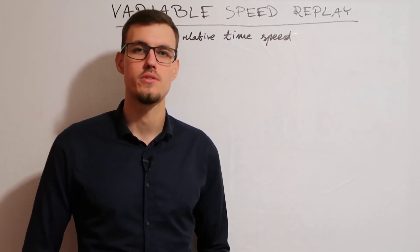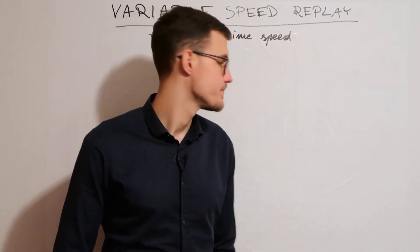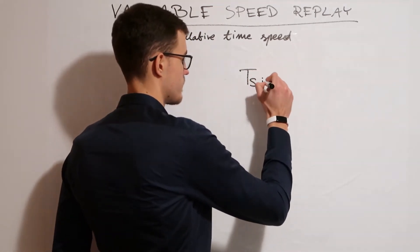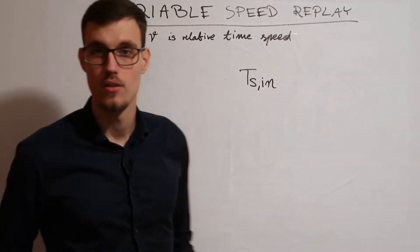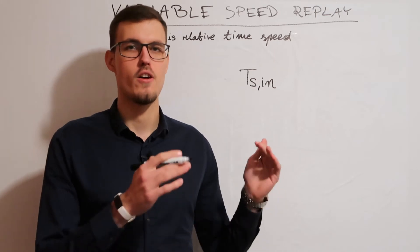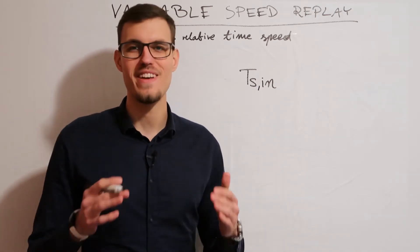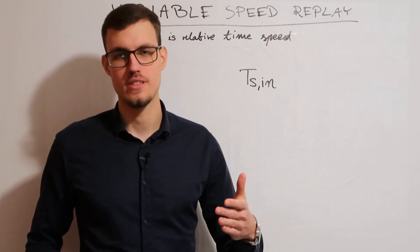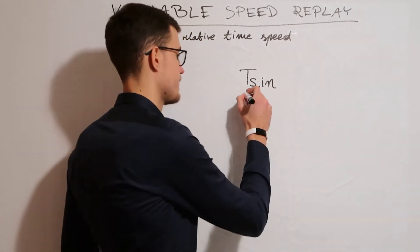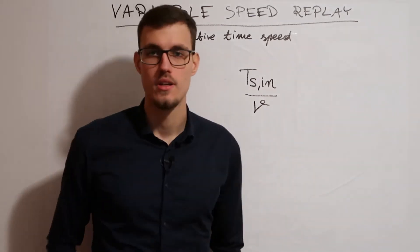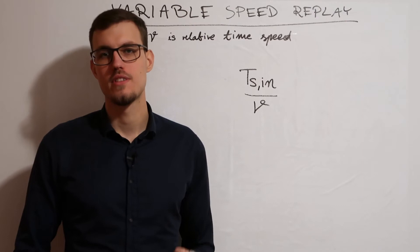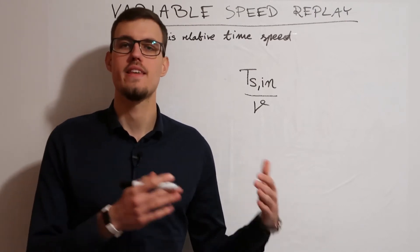Let's consider the time period of our signal. At the input, it was equal to Tsin. Removing V-1 samples from each block of V samples, we effectively shortened our signal V times. This quantity is equal to the signal's period at the output.